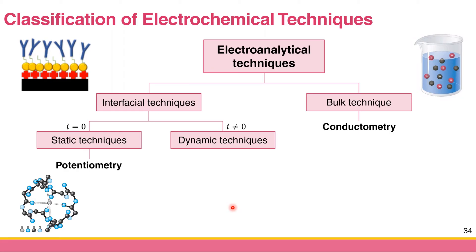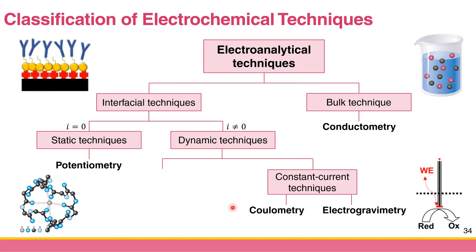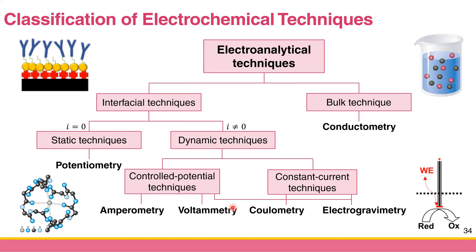In contrast, dynamic techniques are techniques that have current flowing in them — we generate a redox reaction in the dynamic technique. There are many dynamic techniques, and we can further classify them into control potential and constant current. Starting with constant current: if we have a constant current flowing in the system, we have two techniques: coulometry and electrogravimetry, which we will cover at the end of the semester.